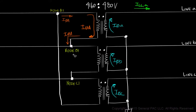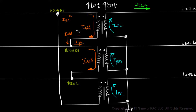Let's now move to Phase B Currents. We know from Part 3 that Primary Phase B Currents must flow into the polarity side of winding B and out of the non-polarity side of winding B. Which means the current that flows out of Node B1, by definition, is Phase B Current. And since the non-polarity side of winding B is connected to the polarity side of winding C, the current that goes into Node C1 is the same Phase B Current.